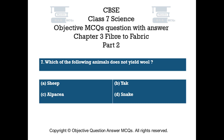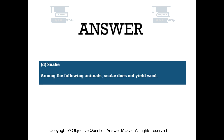Question number 7. Which of the following animals does not yield wool? Option A: Sheep. Option C: Alpaca. Option D: Snake. The right answer is Option D — Snake. Among the following animals, snake does not yield wool.